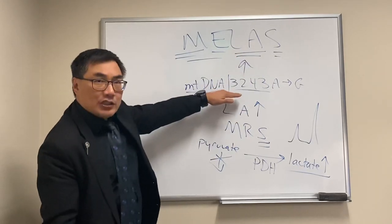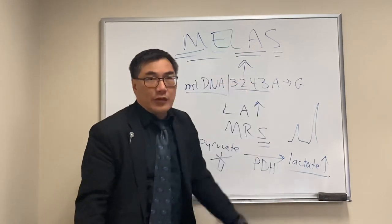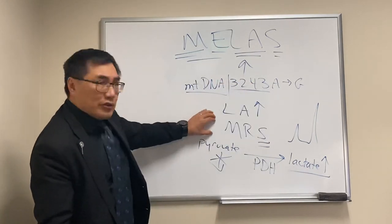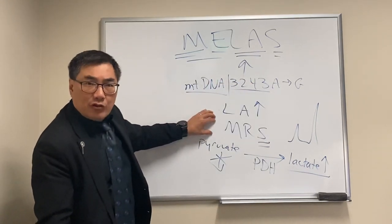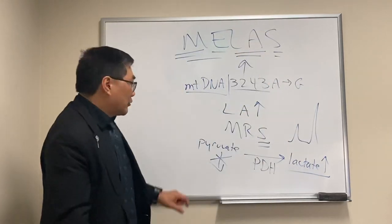And we will order the test, the genetic test for the mitochondrial DNA, usually 3243. And we can use MR spectroscopy on the stroke-like episode to try and detect the lactate peak on MR spectroscopy.